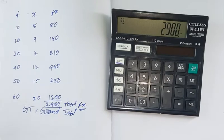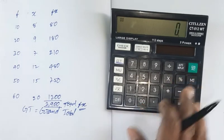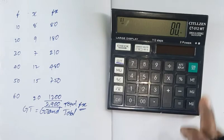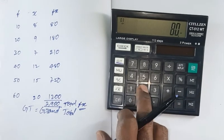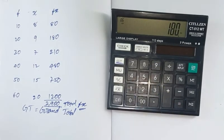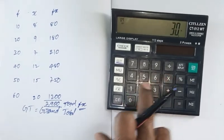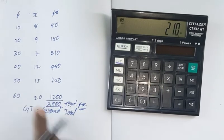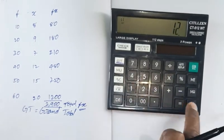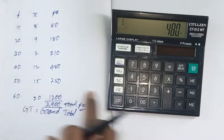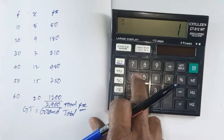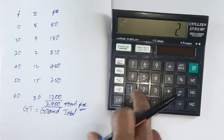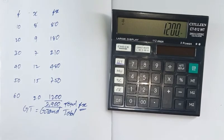So, the calculation is 10 x 8 equal to. So, 20 into 9 equal to. Next, number 30. 30 into 7 equal to. Next, 40 into 12 equal to 480. Next, 50 into 15 equal to. Next, 60 into 20 equal to.